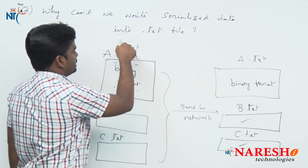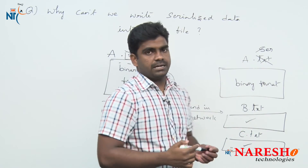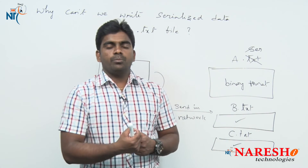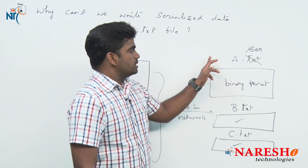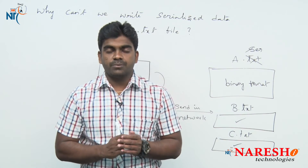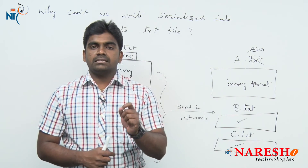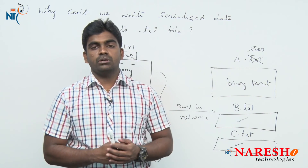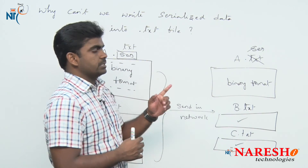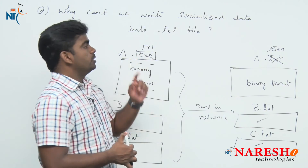That is why, instead of .txt, if you go for a .ser file, the receiver can understand — the other person can understand that it is a .ser file. If they try to open this file, the data will be in binary format and cannot be read directly. It is a serializable file, so we have to deserialize it, converting it into an object, and only then can we see the information. The person who received the .ser file can understand this. File extensions are very important because just by the file extension we can understand what type of file it is. That is why the concept of a .ser file was introduced instead of a .txt file. This is the reason why we cannot write serialized data into a .txt file.